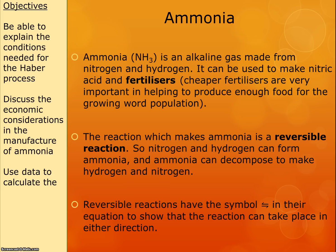Ammonia is an alkaline gas and its chemical formula is NH3, so that means it's a mixture of nitrogen and three hydrogen atoms. It's a really important industrial chemical. It's used to make nitric acid, which is used in a lot of chemical reactions, and it's also used to make fertilizers. Fertilizers are really important because the world population is growing exponentially, so having enough food is one of the reasons why ammonia production is very important.